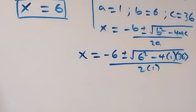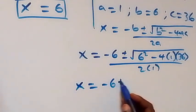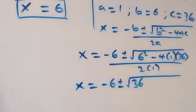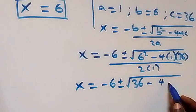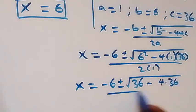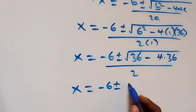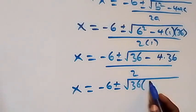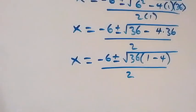Solving further, this gives x equals negative 6 plus or minus square root of 36 minus 4 times 36, over 2. We factor out 36 from inside the square root, giving square root of 36 times (1 minus 4), over 2.